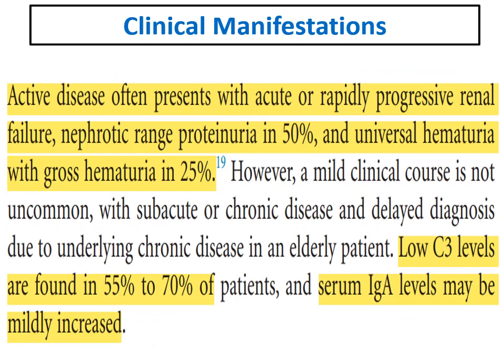Regarding clinical manifestations: in post-streptococcal GN in children, it is mostly a nephritic presentation, while in adults it can be nephritic or in 20% nephrotic. IgA dominant infection-related GN is much more aggressive, usually presenting with acute or rapidly progressive renal failure.